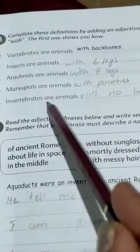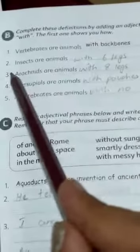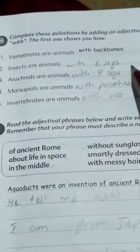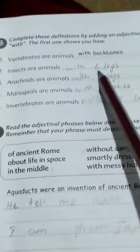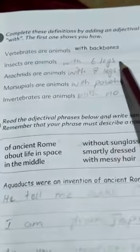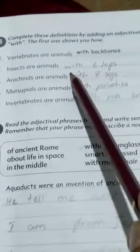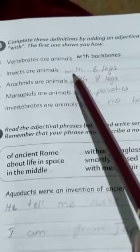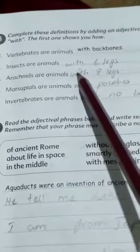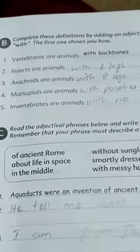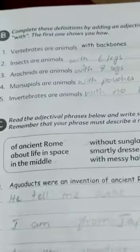Okay, so you will do rest of the blanks like Insects are animals with six legs. So, again here with six legs is an adjectival phrase and it's starting with preposition. So, I hope you have understood this concept of adjectival phrase and will practice at your home. Thank you so much.